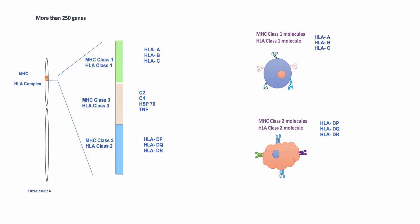In human beings, major histocompatibility or HLA complex is located on chromosome 6. More than 250 genes have been identified in this region.